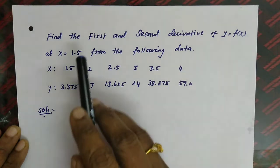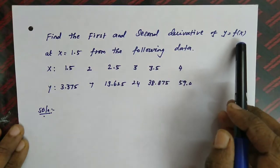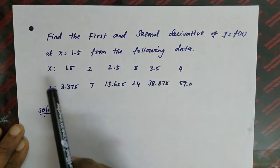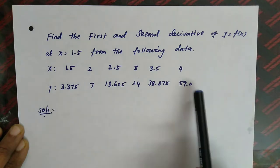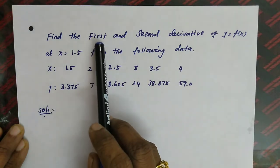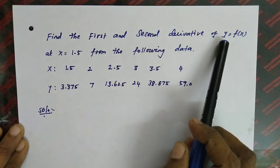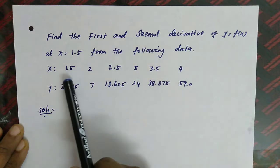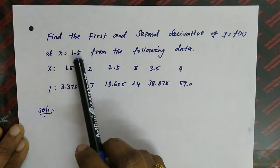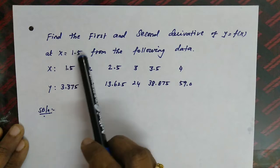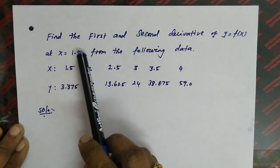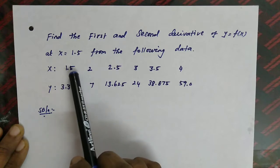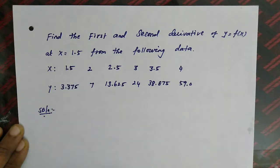Look at the first question: find the first and second derivative of y equal to f(x) at x equal to 1.5 from the following data. The x data and y data are given. We are supposed to find dy/dx and d²y/dx² for the given data. Since x equal to 1.5 is the beginning value of the x data, we have to use the forward difference formula.